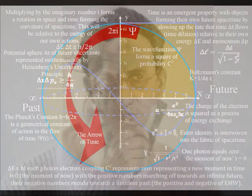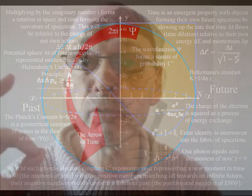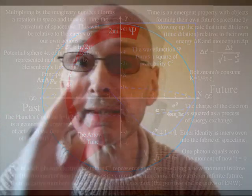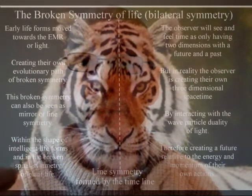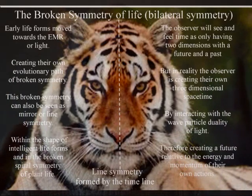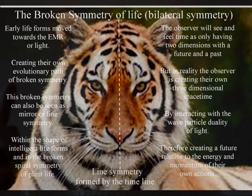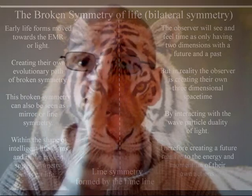Because life is an integral part of this geometrical process, this line symmetry can actually be seen in the physical shape of intelligent life as left and right handedness. Also, the same process that forms this line symmetry forms the Fibonacci spiral in plant life.